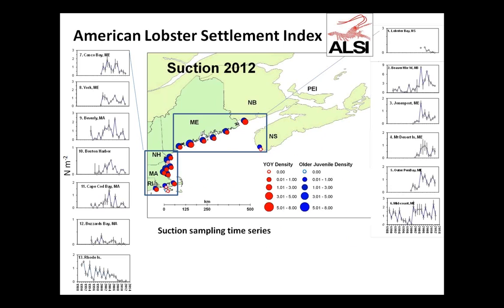We have been monitoring the distribution of newly settled lobsters along the coast of New England and Atlantic Canada. This is a map of the sites that are suction-sampled using a diver-based methodology. We've been monitoring some of these sites for as long as 25 years, going back to 1989, and we're starting to see some interesting trends.